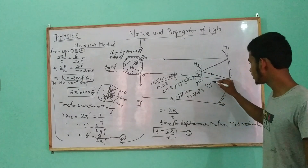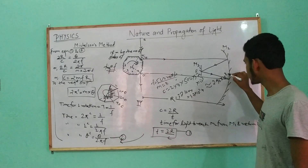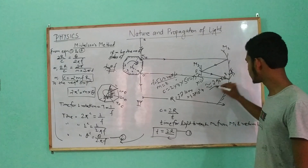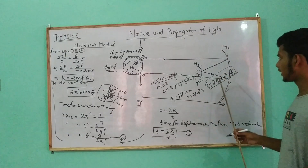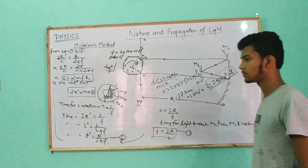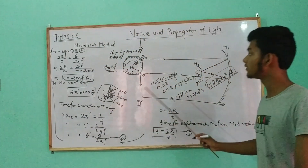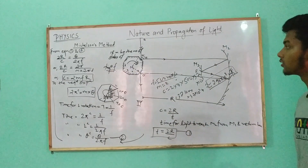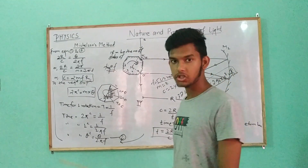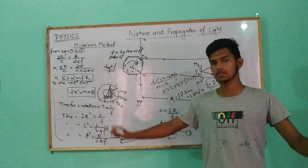So c equals 2 times 8 times 500 times 37 times 10 to the 3. The speed of light obtained is very close to the accepted value. The distance used is 37 km, and though small, it gives an accurate result.